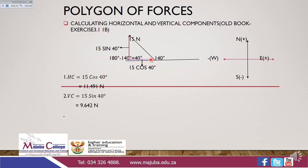Now we need to get the magnitude of this unknown angle. This angle, together with 140 degrees, lies on a straight line, so they are equal to 180. In order to get the magnitude of this angle, we subtract 140 degrees from 180, giving us 40 degrees. So this angle is equal to 40 degrees. Now we have to get the magnitude of this vertical component, which is opposite to 40 degrees.